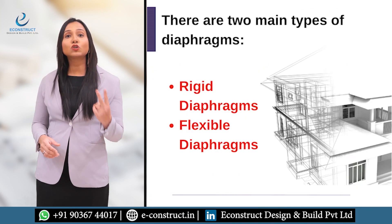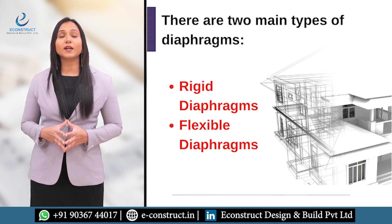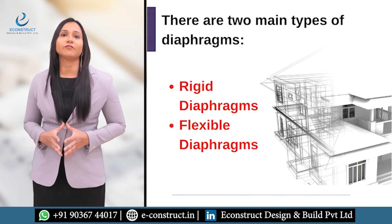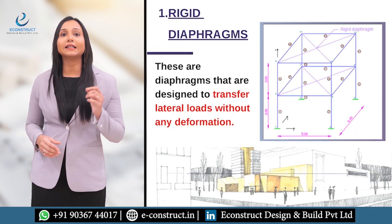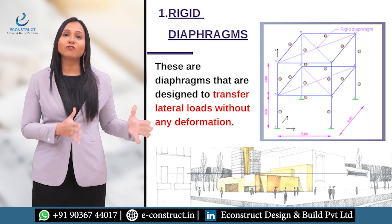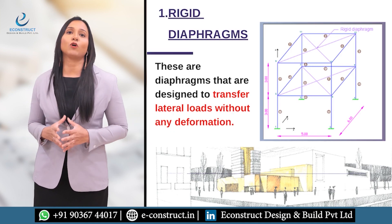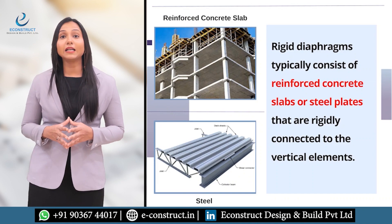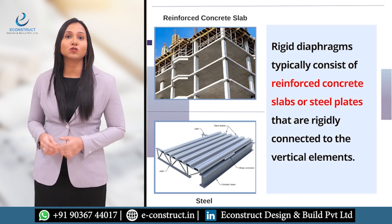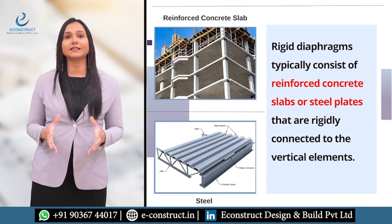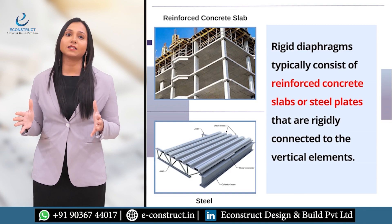There are two main types of diaphragms. The first one is the rigid diaphragm. These are diaphragms designed to transfer lateral loads without any deformation. Rigid diaphragms typically consist of reinforced concrete slabs or steel plates that are rigidly connected to the vertical elements.